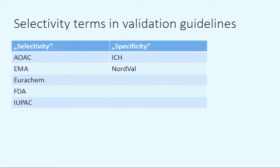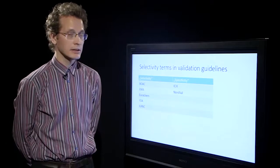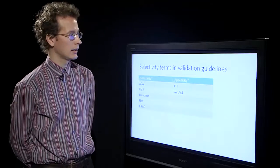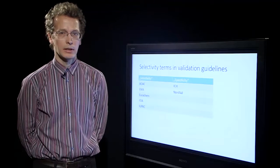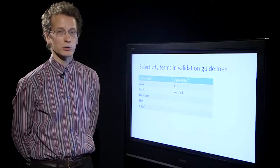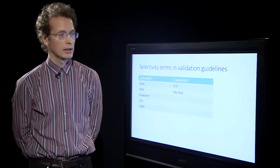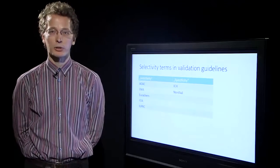Unfortunately, different validation guidelines use different terms to express selectivity. For example, AOAC, Eurochem, and Food and Drug Administration validation guidelines use the term selectivity as defined by IUPAC. On the other hand, the International Conference on Harmonization and Nordval use the term specificity, but they mean the same thing as selectivity as defined by IUPAC. In this presentation we use the term selectivity as defined by IUPAC, and all other terms as defined by IUPAC.